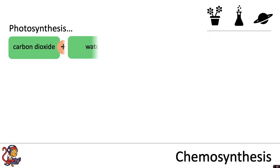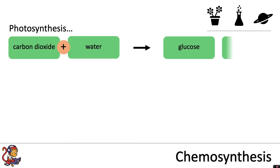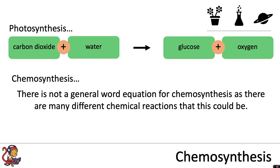Let's remind ourselves of the photosynthesis equation. Carbon dioxide reacts with water to produce glucose and oxygen. Plants and algae use this, along with needing sunlight and chlorophyll for this reaction, to produce their own food — to produce glucose.